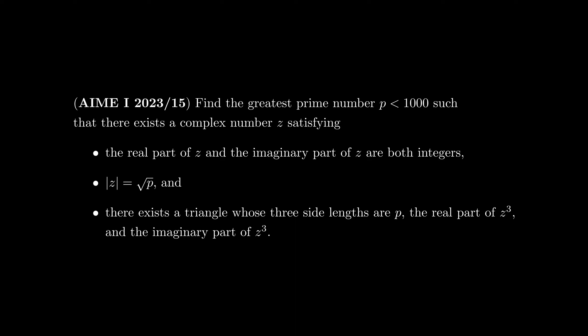Find the greatest prime number p less than 1000 such that there exists a complex number z satisfying the following: The real part of z and the imaginary part of z are both integers, and the modulus of z is square root of p.